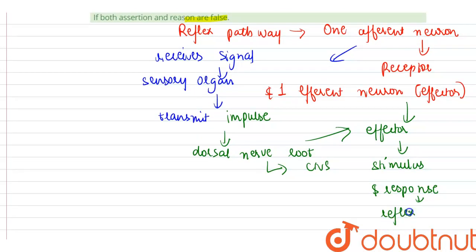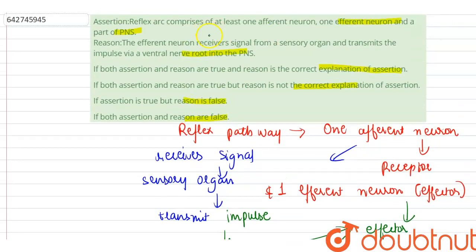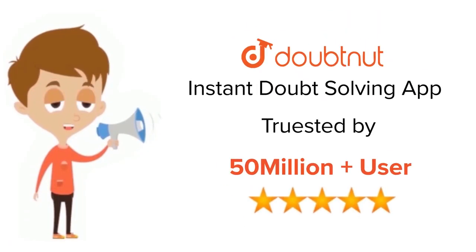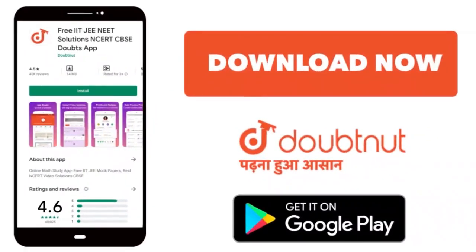So here the statement that is given in the assertion and the statement that is given in the reason both are incorrect, so the correct option is both assertion and reason are false. For class 6 to 12, IIT-JEE and NEET level, trusted by more than 5 crore students, download Doubtnut app today.